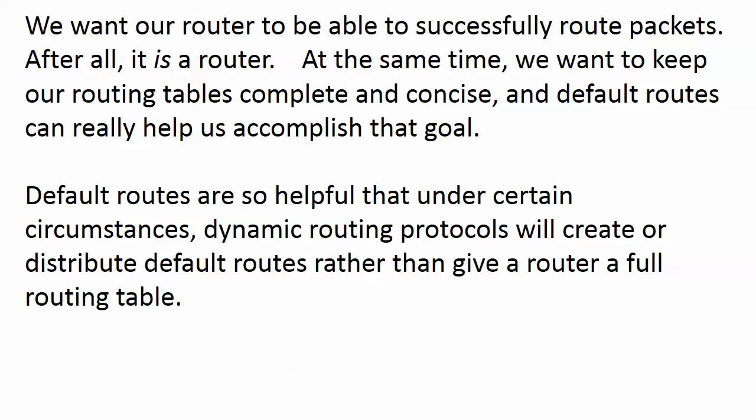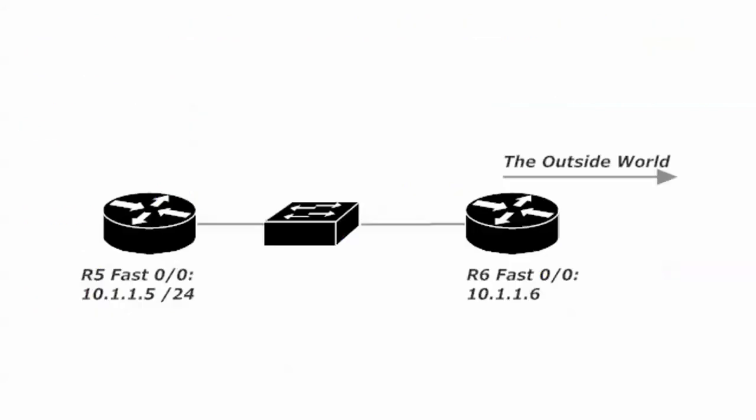Default routes are so helpful under certain circumstances that our dynamic routing protocols — RIP, EIGRP, OSPF — will either allow the creation or the distribution of a default route under certain circumstances, rather than give a router a full routing table. It's one of those things that sounds pretty vague when you read about it, so let's have an illustration.